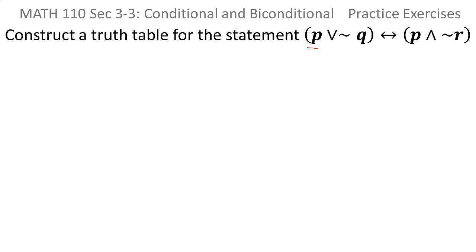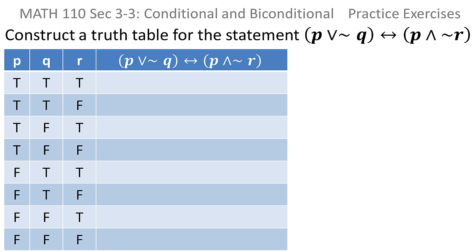Construct the truth table for this statement. Notice that it is a biconditional this time. First thing we do, as always, is set up the truth table. Because there's a P, a Q, and an R, this truth table will have two to the third, or eight rows, as the previous problem did. But remember, this is a biconditional this time.